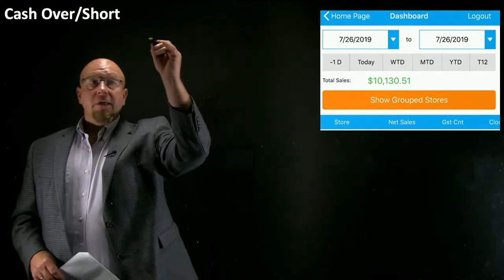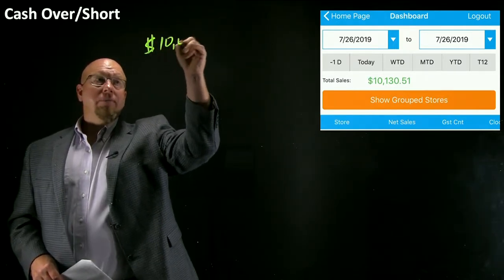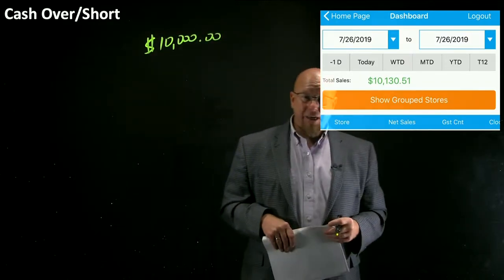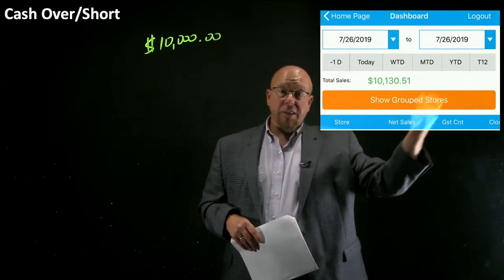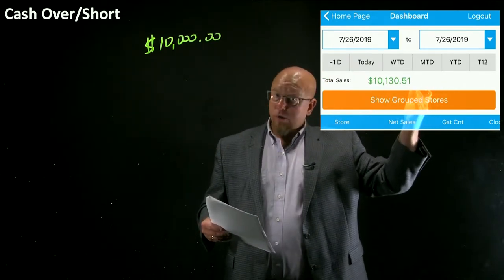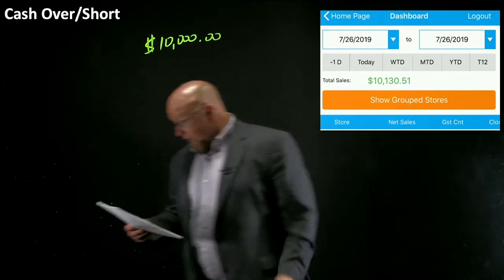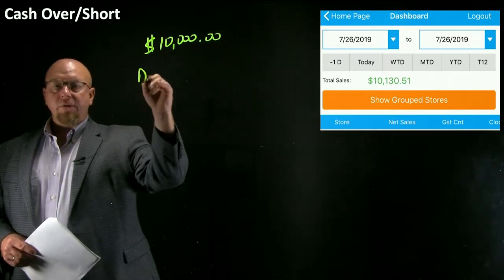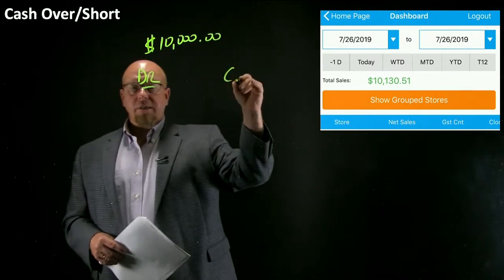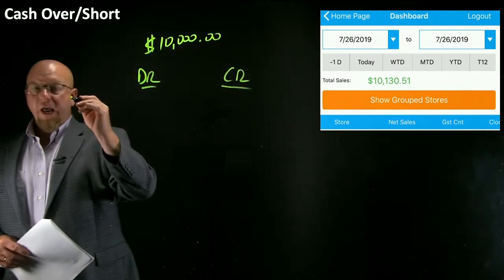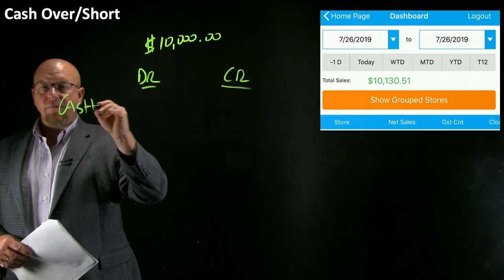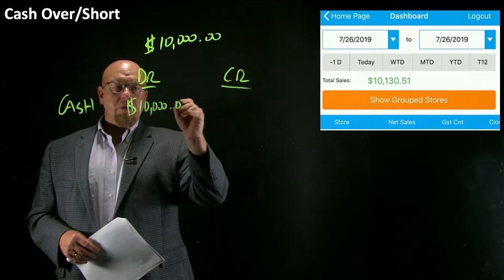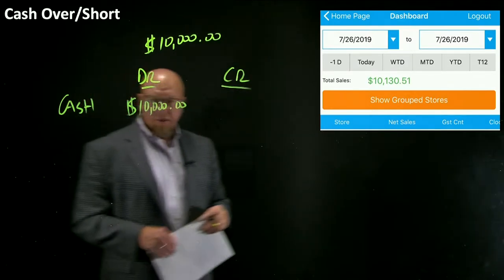So the question is: if we count the cash drawer and there's $10,000, that's what's going to get deposited into the bank, but sales revenue was really $10,130.51 — how do we record that? Let's look at the journal entry. Debits, credits — remember cash is an asset account, and assets get increased with a debit entry. So the journal entry to increase cash would be a $10,000 debit.